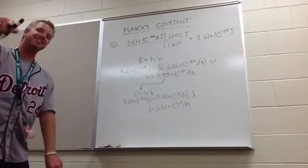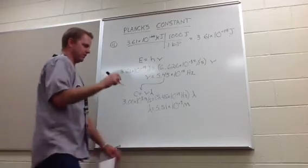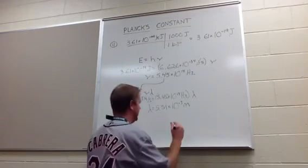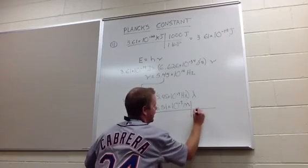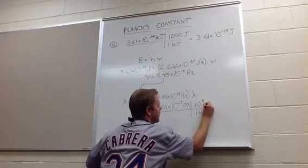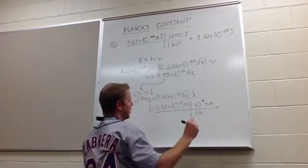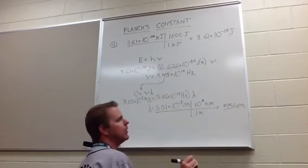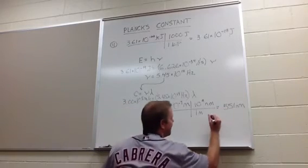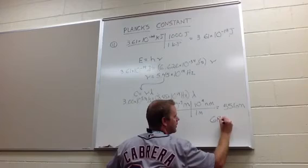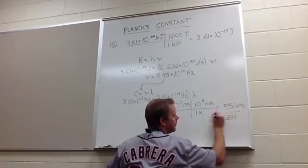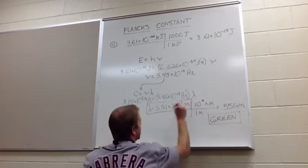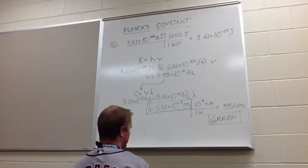That answers the first question. But this also wanted to know what color it was. Our spectrum is in nanometers, so in one meter there is 10 to the 9th nanometers. When you do that conversion, you get 551 nanometers. You go find your chart, look at where 551 nanometers falls, and it is indeed green light — my favorite color. So there's the first answer in meters, and the second answer is the color green.